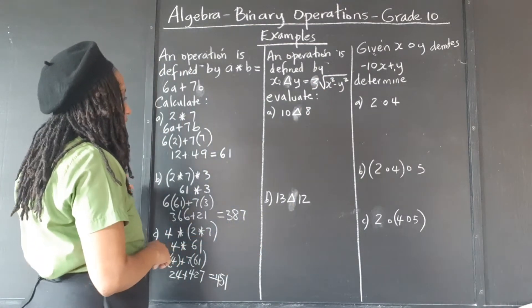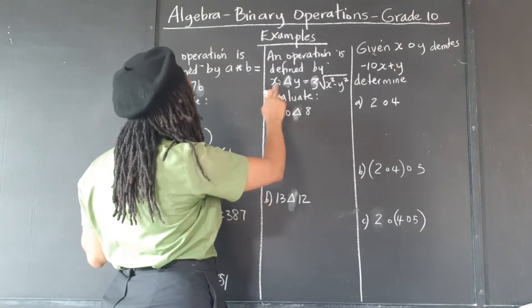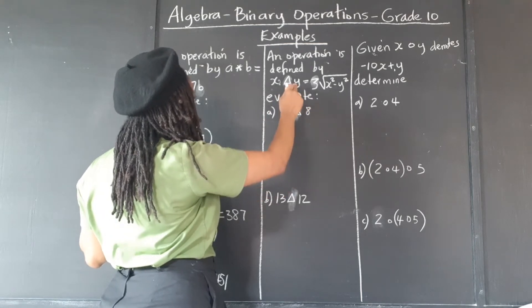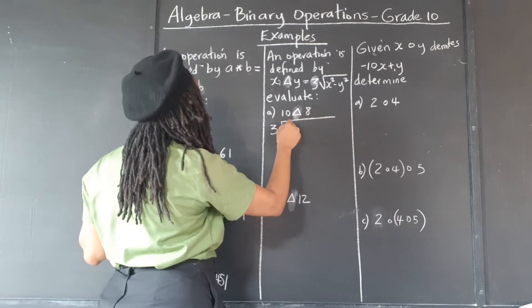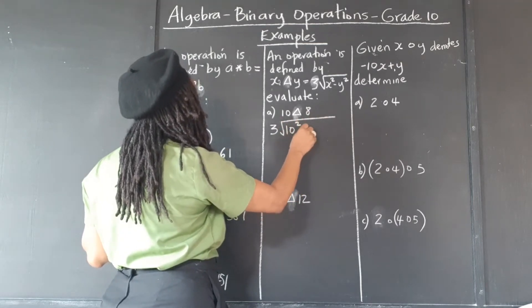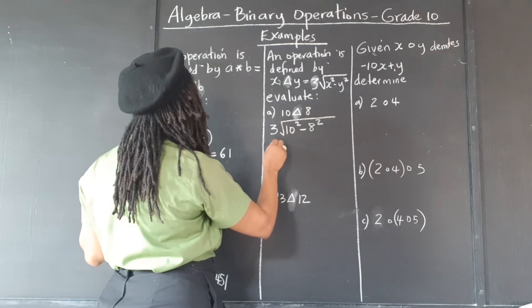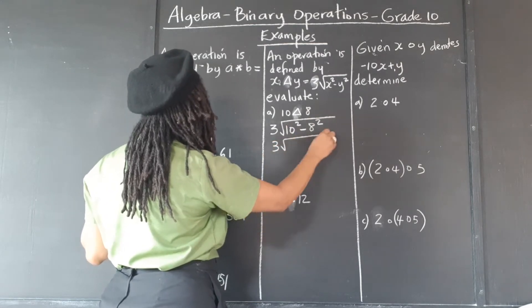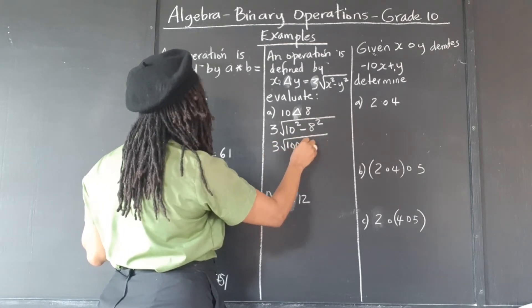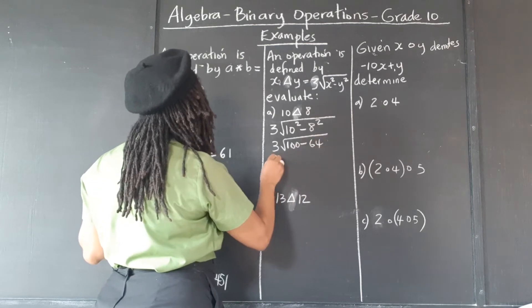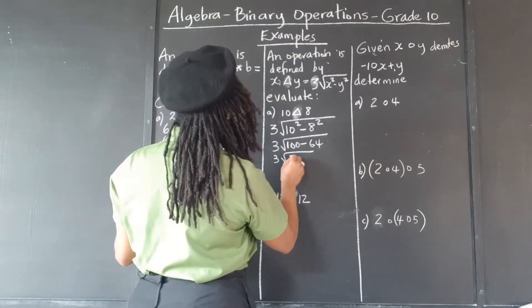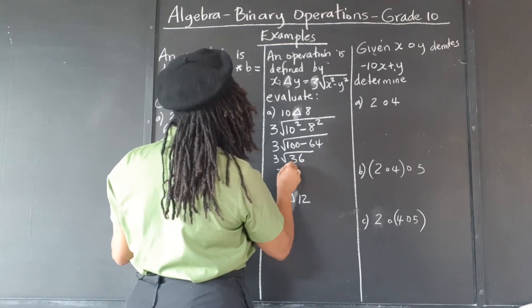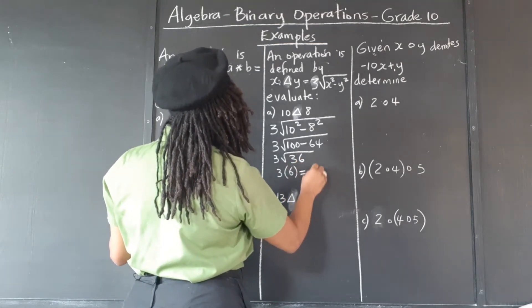Alright, so we're substituting 10 for x and 8 for y. So that means 3 times the square root of 10 squared minus 8 squared, 3 times the square root of 100 minus 64, 3 times the square root of 36, 3 times 6, which is 18.